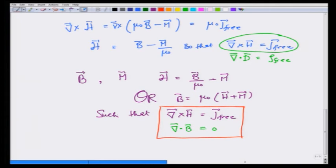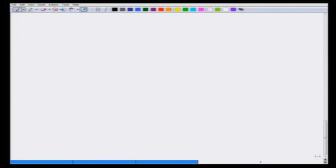Again these are very similar to the equations we had for electrostatic situation where I had curl of E equals zero and divergence of D equals ρ_free. This is very similar: curl of H equals j_free and divergence of B equals zero.